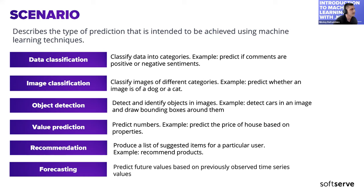Object detection detects and identifies objects in images — for example, detecting cars in an image and drawing bounding boxes around them. Value prediction is used to predict numerical values like the price of a house based on properties such as number of bedrooms. Recommendation produces a list of suggested items for a particular user — for example, recommending products. Forecasting predicts values based on previously observed time series values, so based on a large data set we predict some future values.